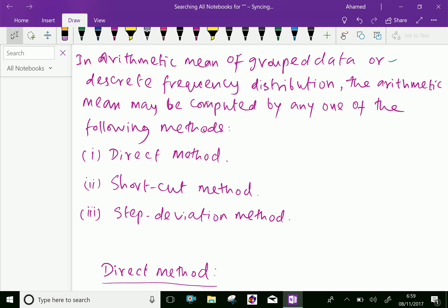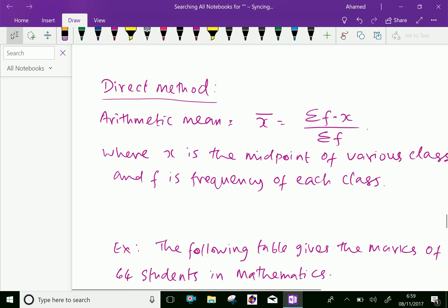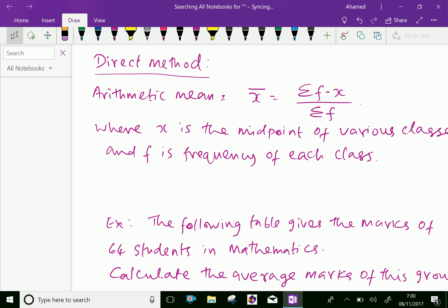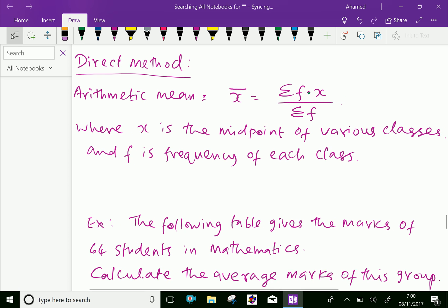First, let us discuss about direct method. Arithmetic mean, that is x̄ equals sigma fx over sigma f, where x is the midpoint of various classes and f is frequency of each class.